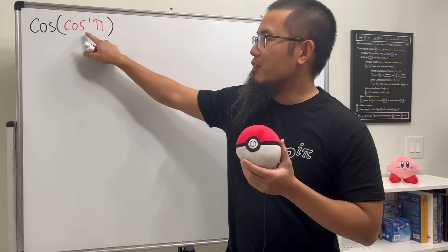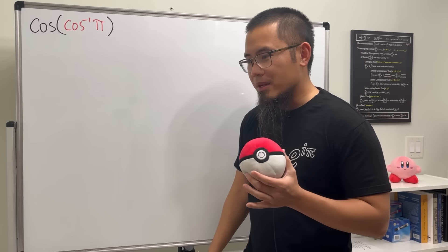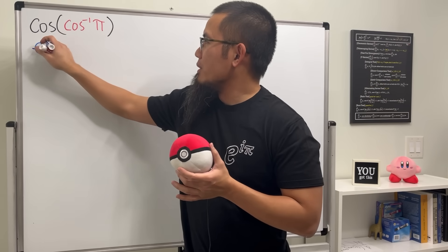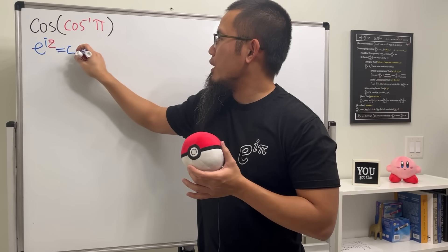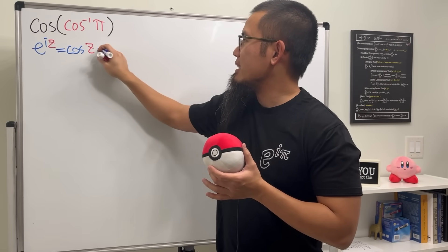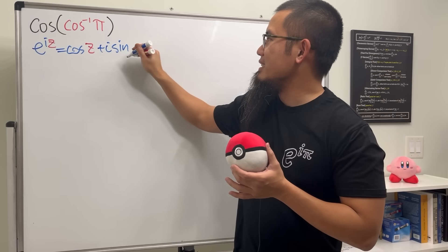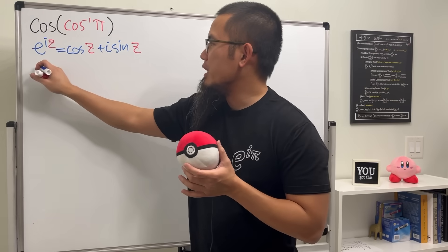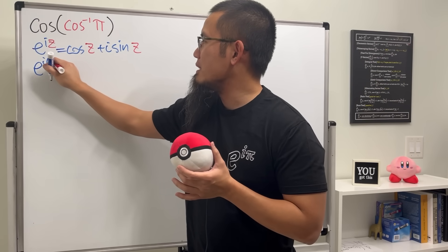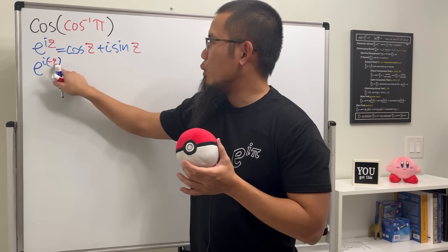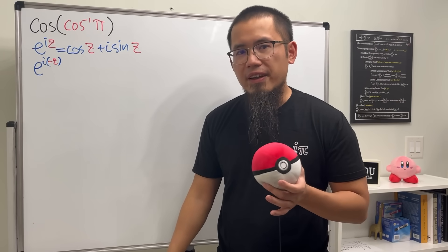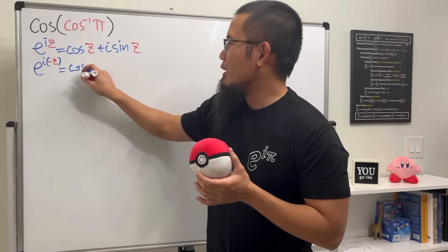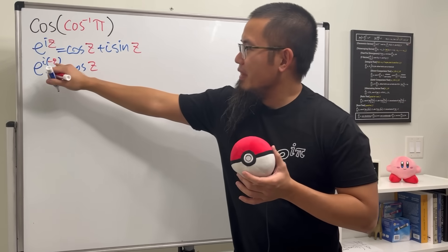In order for this to make sense we will have to talk about the complex definition of cosine first. Thanks to Euler's formula we have e to the iz equal to cosine z plus i sine z. Next we are going to plug in negative z into all the z's, so we get e to the i times negative z. When we put this inside cosine — because cosine is even, even in the complex world — we can still just get cosine z.